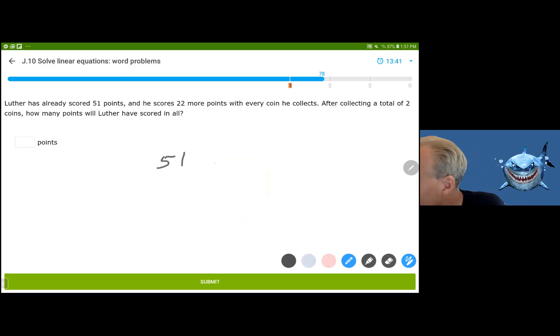Luthor already has already scored 51 points. And he scores 22 more points with every coin he collects. Plus 22 per coin. This is the number of points that he has depending on the number of coins. You see, this is my dependent variable. And my independent variable is the coins. That's how you describe it. This is a, the number of points he has is a function of the number of coins that he earns. In this case, if he's collected two coins. So you want P of two, which isn't very interesting. It's just 51 plus the 22 times the two coins, which is 51 plus 44 or 95 total. That is 95 points.